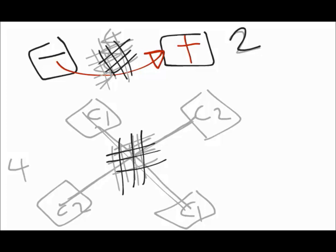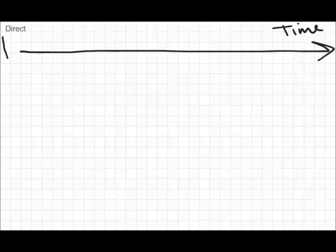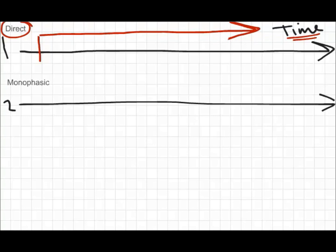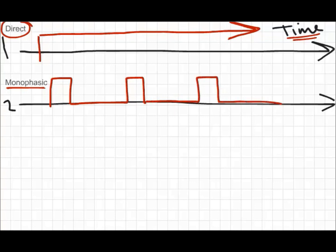The first waveform is direct current — you turn the electric stimulation on and it stays on continuously as time progresses. The second waveform is monophasic, which has a single phase going in one direction: it goes up and dies down, then goes up again. It's called monophasic because it goes in one direction — on, off, on, off.